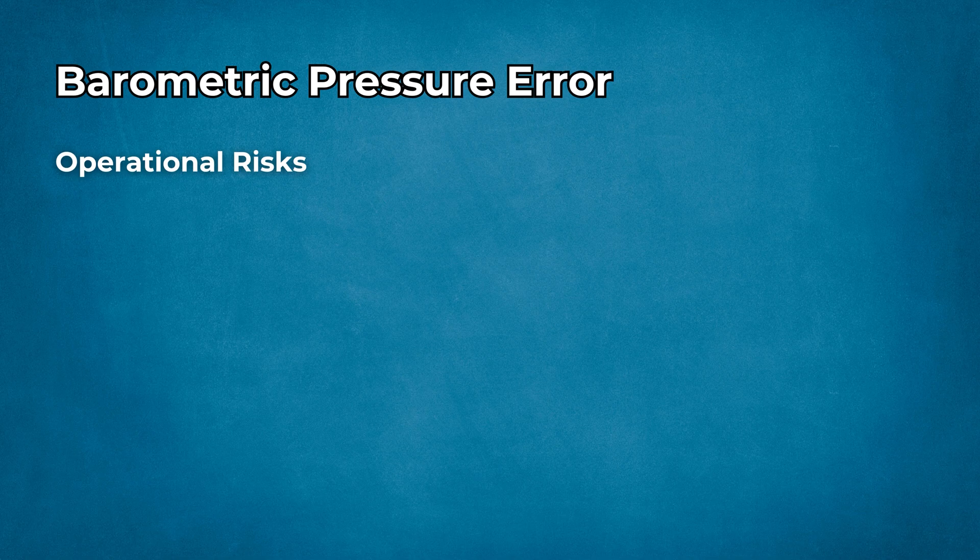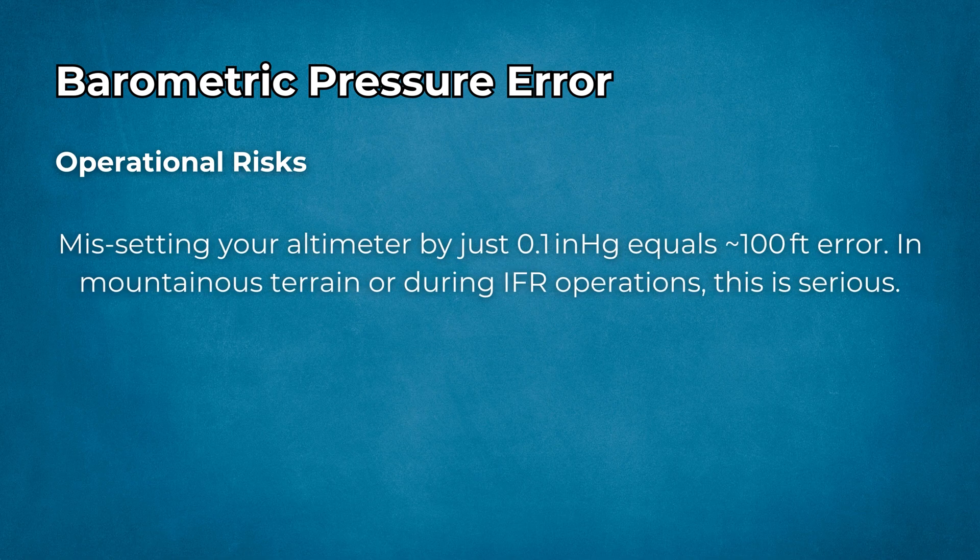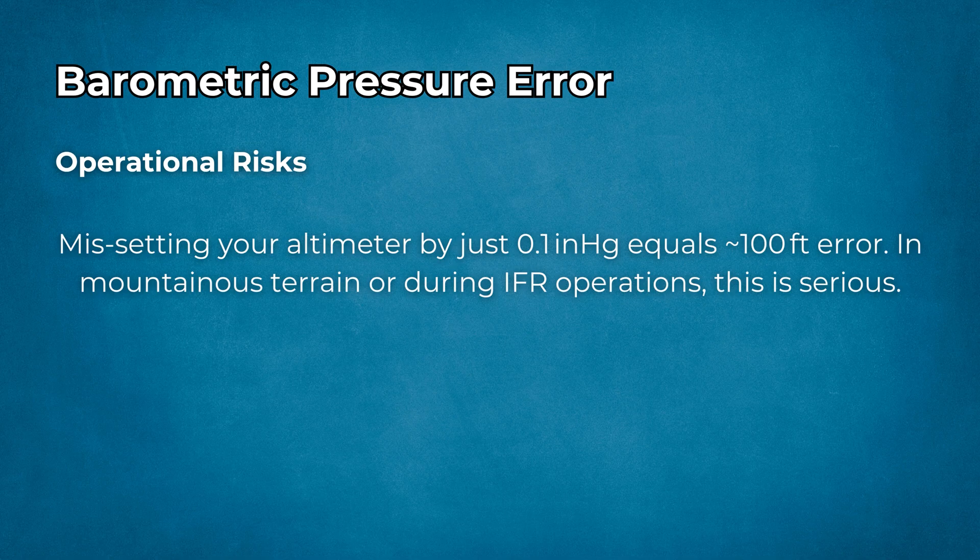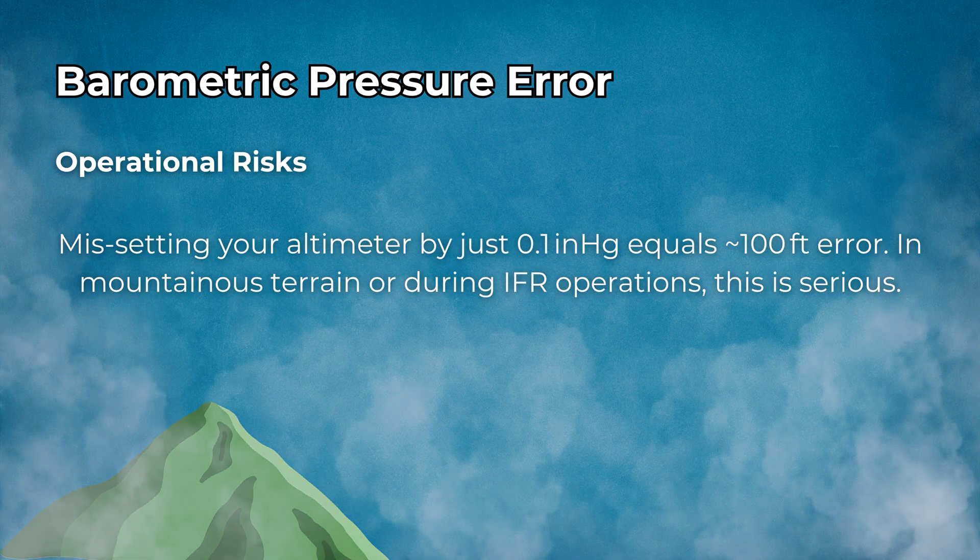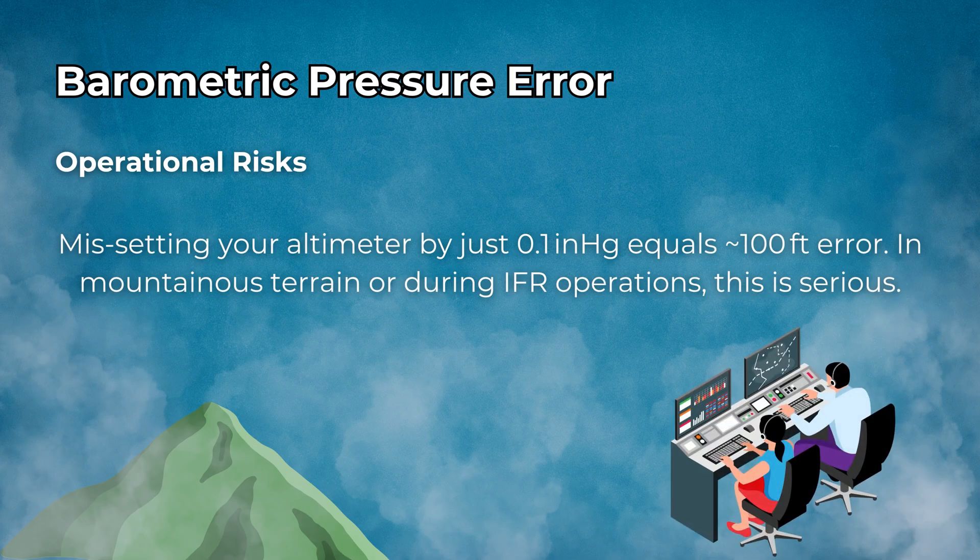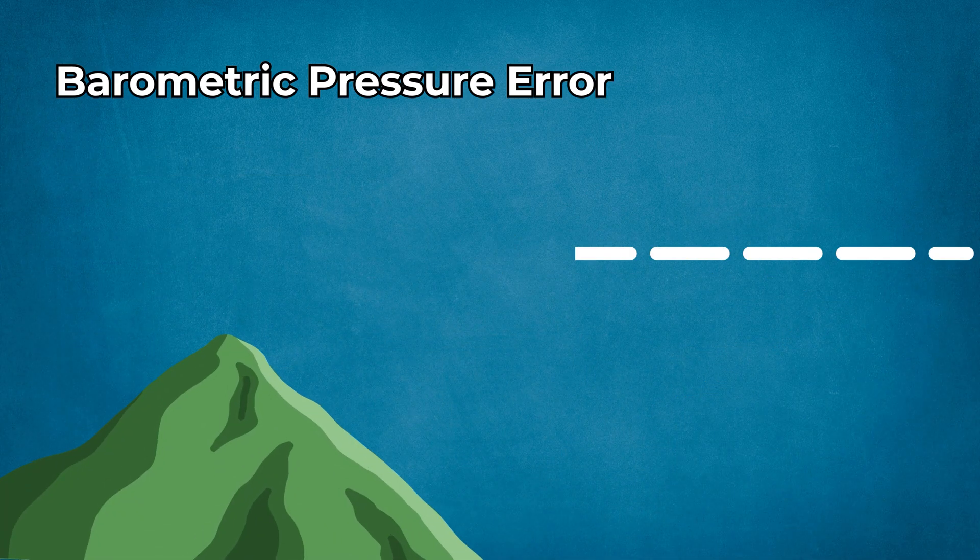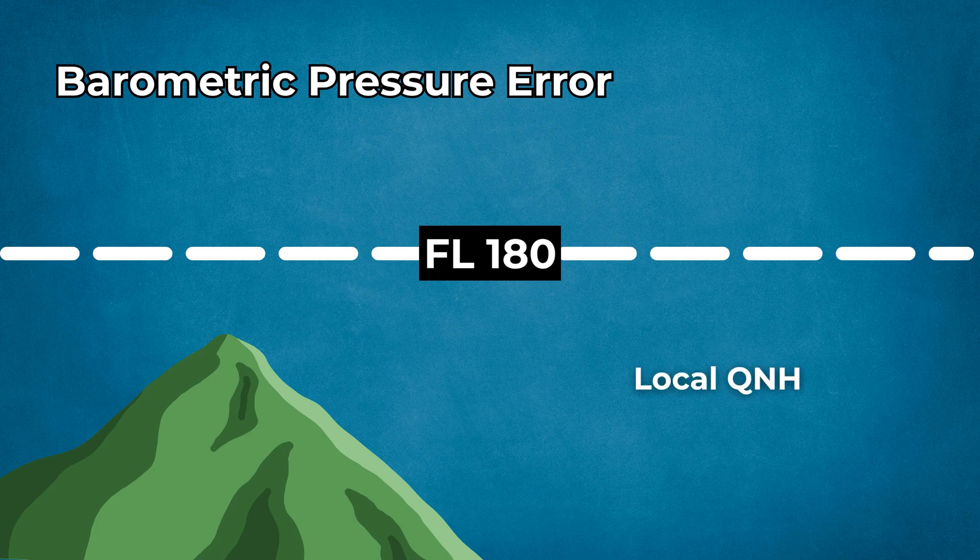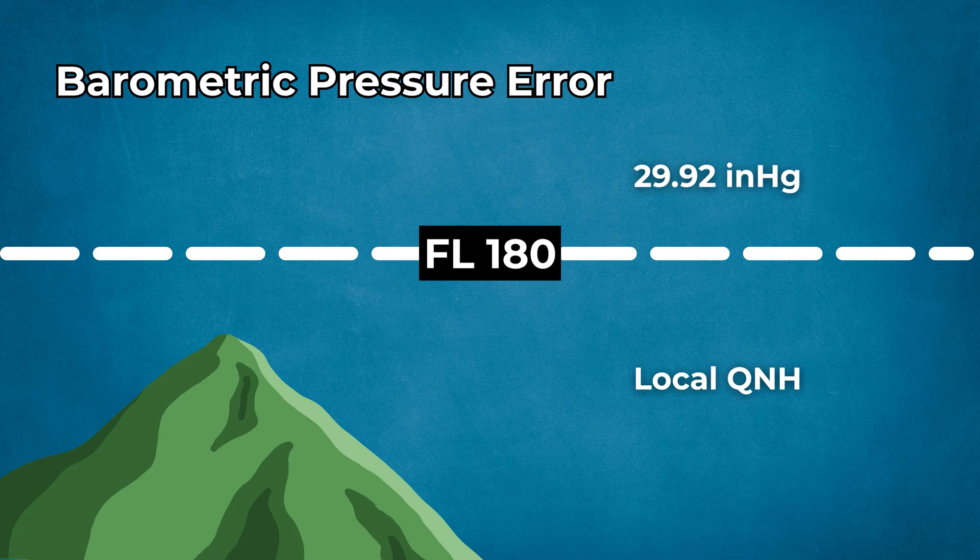Operational risks: miss-setting your altimeter by just 0.1 inches of mercury equals approximately 100 feet error. In mountainous terrain or during IFR operations, this is serious. Always update your altimeter with current QNH. Controllers give this QNH information. Follow standard procedures. Below flight level 180 in the U.S., use local QNH. Above, use 29.92 inches of mercury.